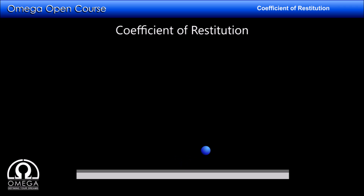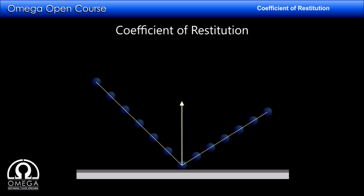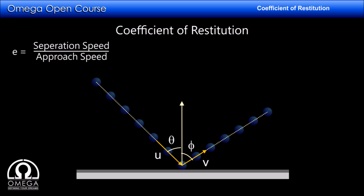Now consider another example where the ball collides with the wall not normally but at some angle. The speed with which the ball hits the wall is u at an angle theta with the normal, and it rebounds with speed v at an angle phi with the normal. The separation speed in this case is not v but the normal component of v, which is v cos phi. Similarly, the approach speed is the normal component of u, which is u cos theta.